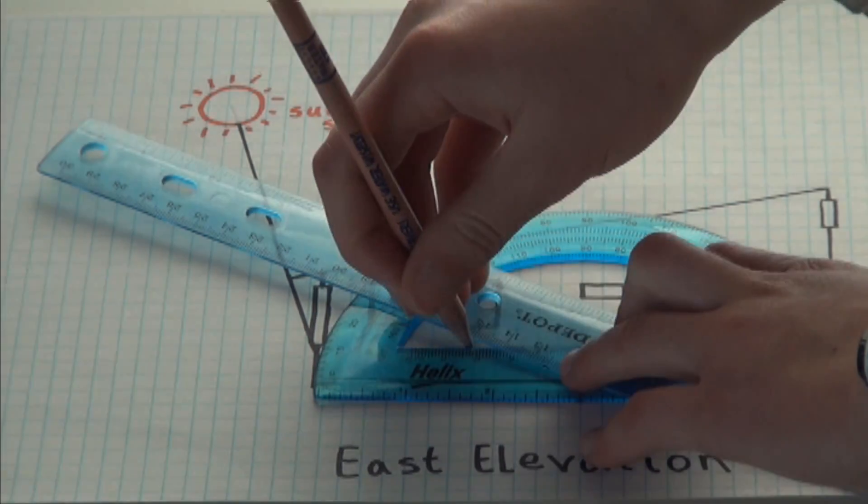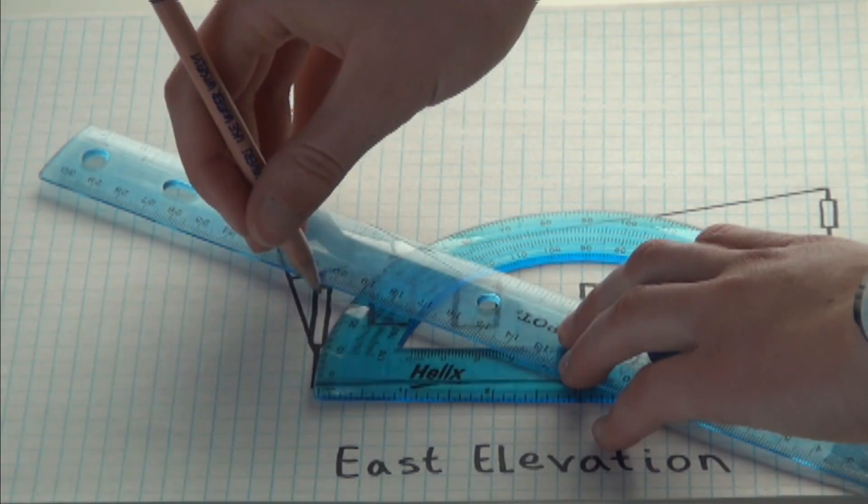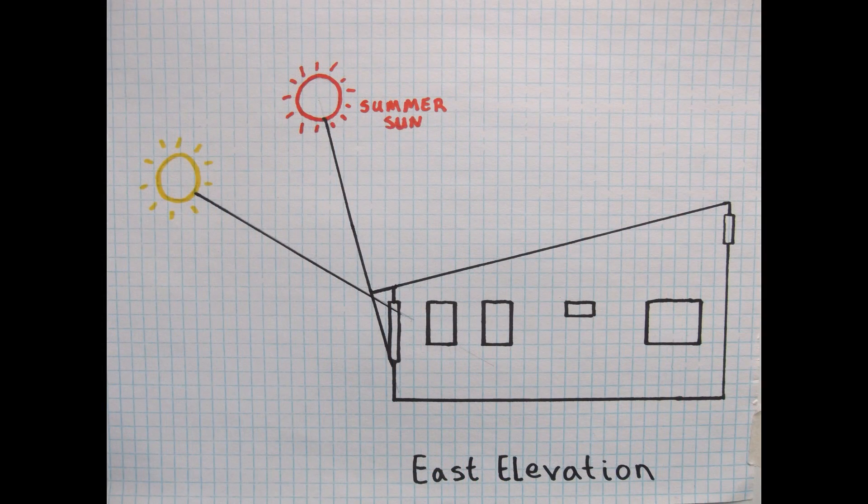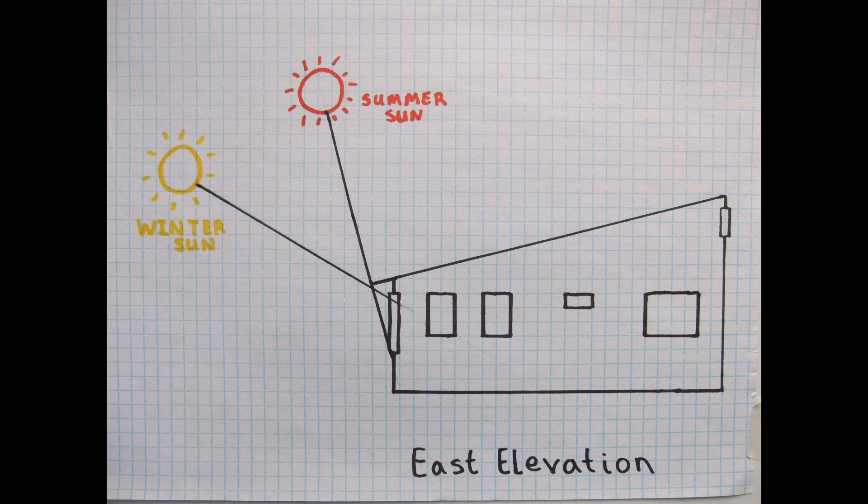Draw a line along your ruler at this angle. Then draw another sun and label it winter sun. Now we can see that the overhang extends just enough to block the summer sun's rays from overheating the house during the middle of the day in summer, but not so much that the winter sun's rays can't shine through our windows to heat the thermal mass and warm up our house during winter.